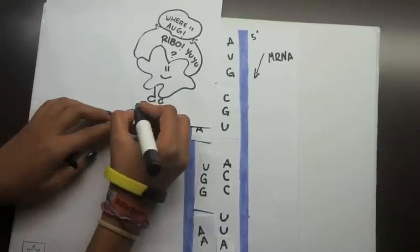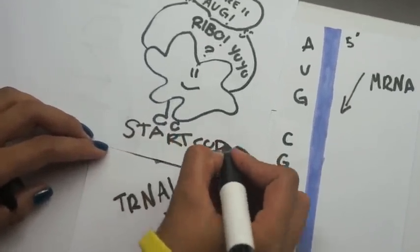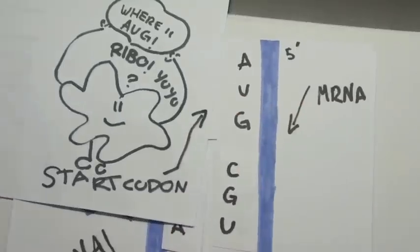After inserting the amino acids, Mr. Ribo is looking for the start codon, signified by the letters A, U, G.